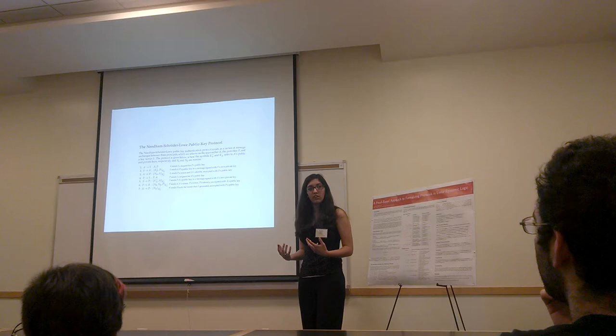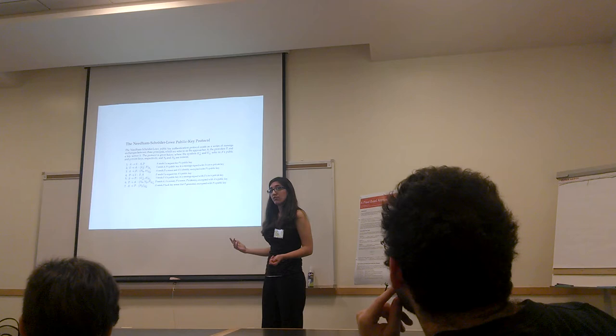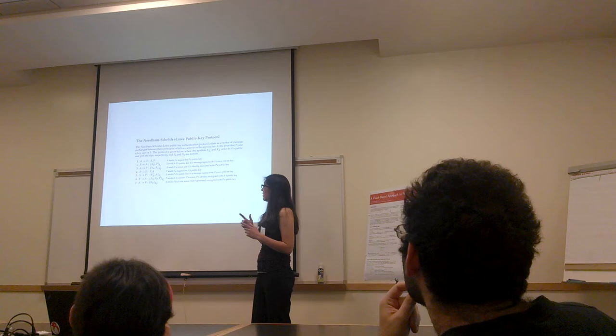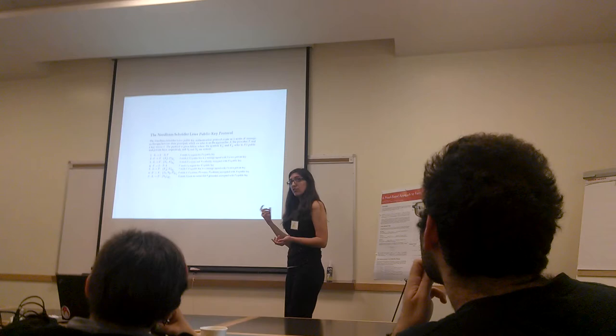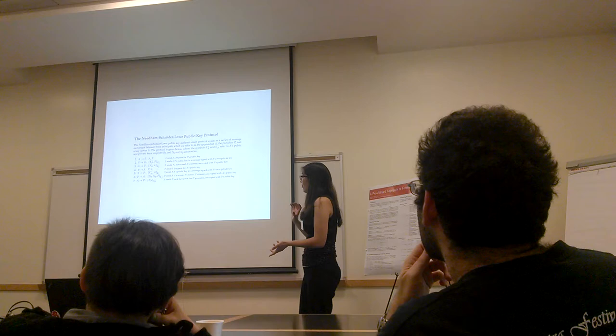I'm going to explain the notation here because it's a little cryptic looking. In the first step, the approacher sends the key server a request for P's public key. In the second step, the server sends the approacher an encrypted message containing P's public key and P's identity. This message is encrypted with S's private key — we call this a digitally signed message because public and private keys are inverses of each other, so they can encrypt each other.